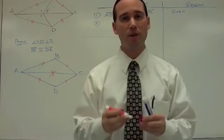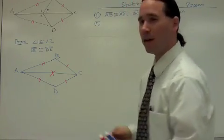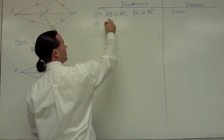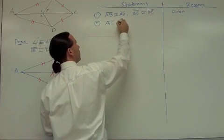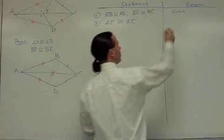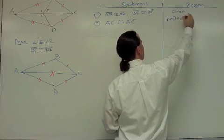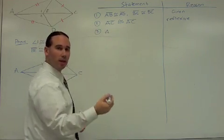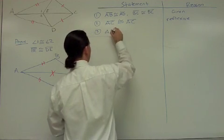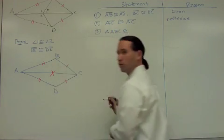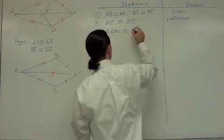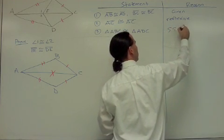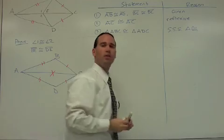So this is where we're going to begin this proof. We're going to start by saying those two triangles, ABC and ADC, are congruent by side-side-side. In order to do that, we need to add a step of congruence. AC congruent to AC. Reason is reflexive. And we can now claim triangle ABC congruent to triangle ADC by reason of side-side-side triangle congruence.